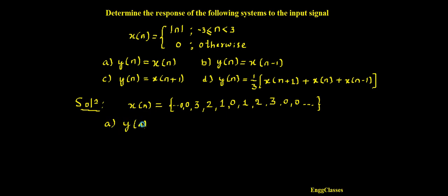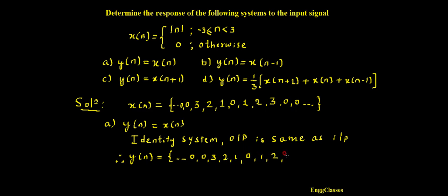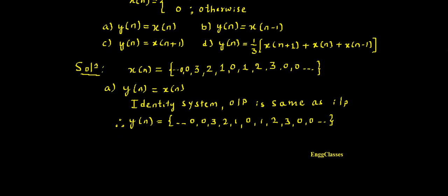Let me consider the first system y(n) = x(n). This system is known as an identity system, meaning the output is the same as the input. Therefore y(n) has the same samples: ..., 3, 2, 1, 0, 1, 2, 3, ... with zeros continuing to infinity on both sides.